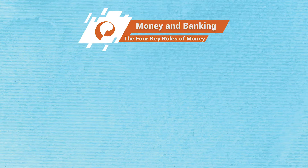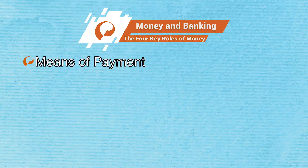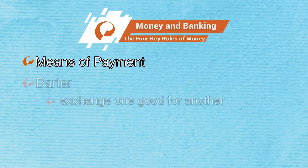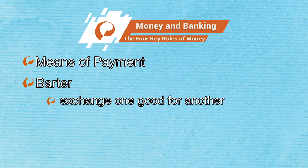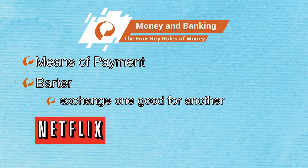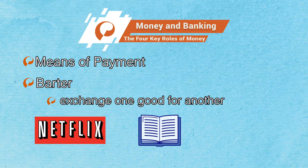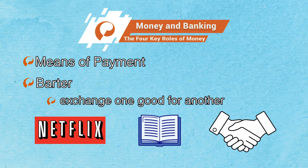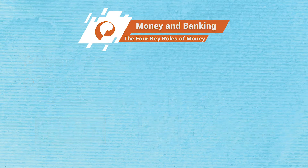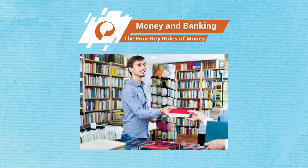Economists find that money has four key roles. The first is means of payment. Money makes it easier for buyers and sellers to come together and trade. Without money, people would have to barter — that is, exchange one good for another. However, bartering requires a double coincidence of wants, meaning both parties have to want what the other has. For example, if Joe wants to trade his Netflix subscription for a DSST study guide, he has to meet someone who has a DSST study guide they don't want and who wants a Netflix subscription. Because money is widely accepted as a means of payment, when Joe wants to trade money for a DSST study guide, he can easily find a bookstore willing to trade a DSST study guide for money.